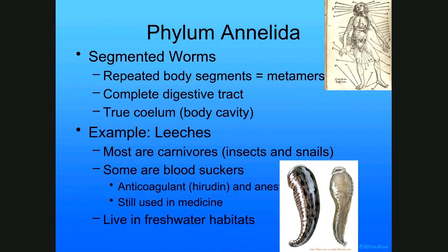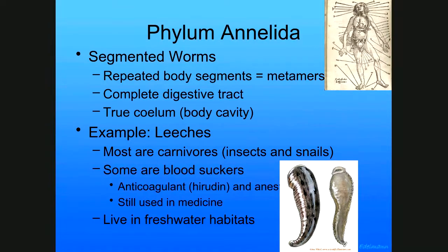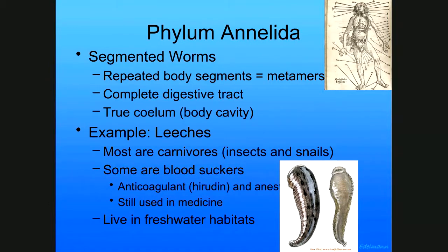We also looked at leeches. Leeches are blood suckers and carnivores — a lot of them eat insects and snails, and some are blood suckers. There's a video on the website that talks about the characteristics of leeches. But what we're going to try to do today is the skull identification — Larry gave us materials for that.